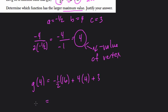So negative one-half times 16, g(4) equals negative 8, plus 16, plus 3. Negative 8 plus 16 is 8, plus 3 is 11. So the vertex here is a higher maximum.